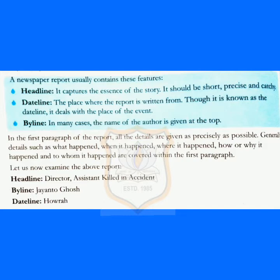And who were killed? A director and his assistant. And what happened? They died in an accident. Where did this accident happen? It happened on National Highway 6 at Jalipada in Havra. And when did it happen? It happened on Monday. And how did it happen? The driver of the car lost control and hit the truck.